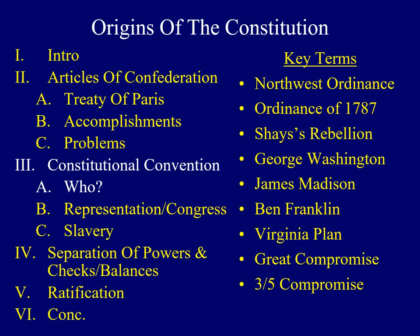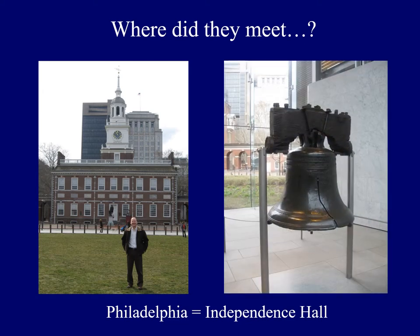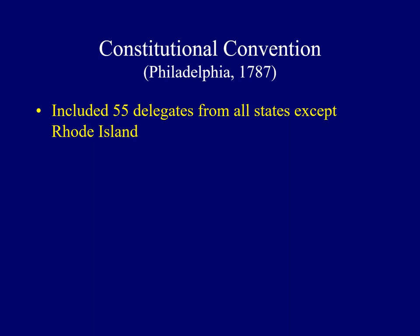The name of the important meeting called to fix the problems with the Articles of Confederation was the Constitutional Convention. We'll provide some background information about several of the individuals who attended. The delegates met in the city of brotherly love — Philadelphia — at what's now called Independence Hall. There were 55 delegates who attended, and some have argued this was the greatest collection of minds under one roof in all of American history. Because so many attended, it would be impossible to identify all of them, but we'll highlight a few important participants.